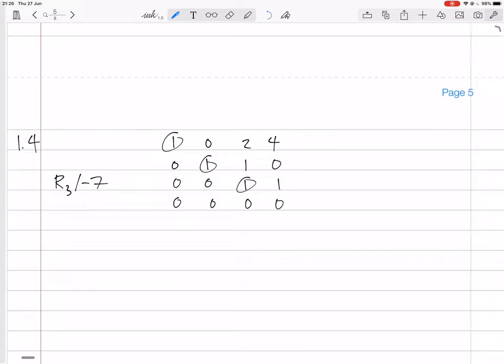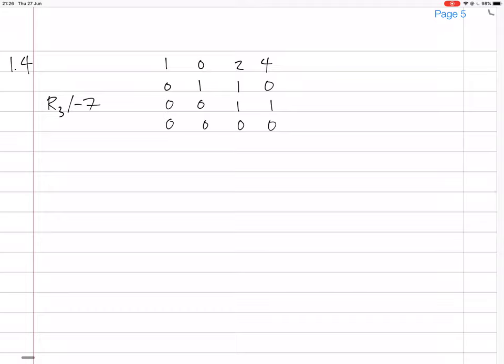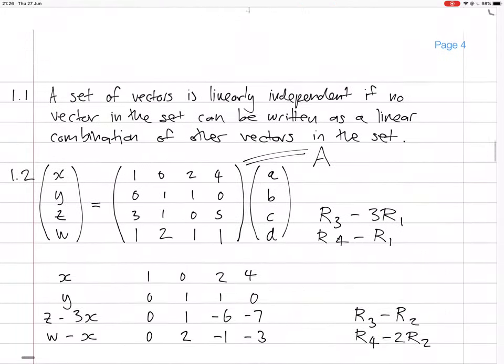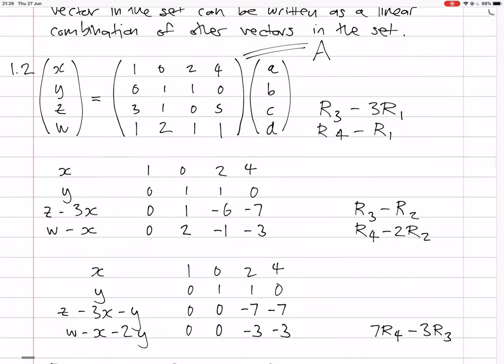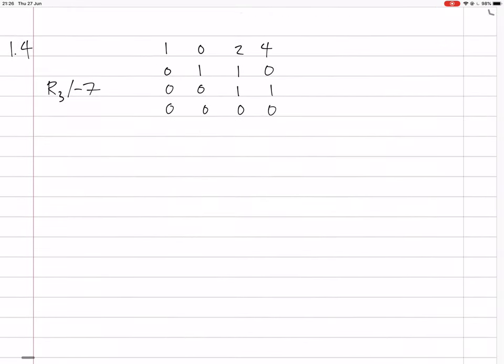So this shows us that the fourth vector is dependent on the other three vectors, but those three vectors are independent because the first three columns, they've all got a pivot in them. So that fourth vector is dependent on the other three, so a basis would be...